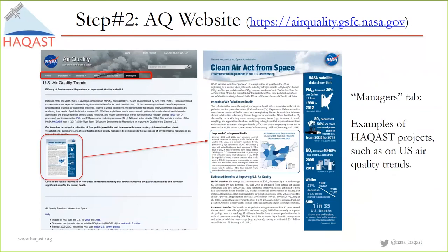Under the Managers tab on the far right, there are a number of HeyCast projects. I picked one: an HeyCast project where air quality managers asked us to use satellite data to show that air quality has improved in the U.S. and to estimate the associated health benefits. We worked with health professionals in HeyCast to quantify improvements in human health. We developed a four-page fact sheet that summarizes this information in plain language, at the request of air quality managers who wanted to present it to the public or policymakers. Again, all of these are free and publicly available.